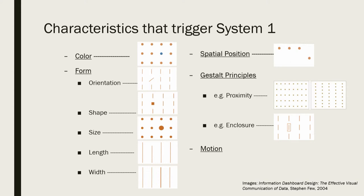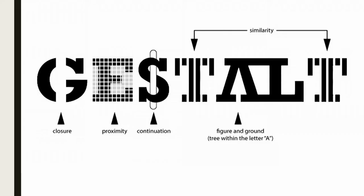And then, of course, there are gestalt principles. Two of them right here: proximity — some objects are closer together or further apart — and enclosure, wrapping around an object to draw attention to it. This is a great meta example of gestalt principles, and there are many — upwards of a dozen. All you have to remember about gestalt is: the whole is greater than the sum of its parts. Complex images tend to be reduced to simpler shapes in our brains for efficient processing, so we can perceive them more easily.